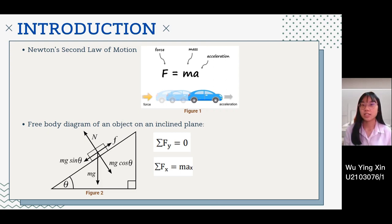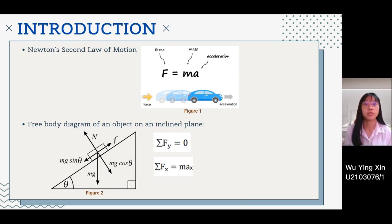According to this law, the acceleration of an object is directly proportional to the force applied on it and inversely proportional to its mass. The formula derived from this law is f equals to mA, as shown in figure 1. As our situation involves the wheelchair going up an incline surface, as shown in the free body diagram in figure 2, there are two forces to analyze: summation of fx and summation of fy.